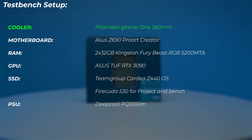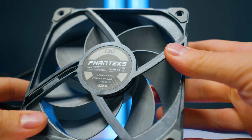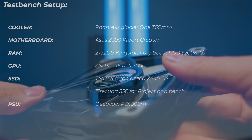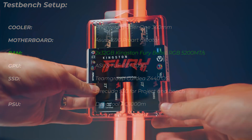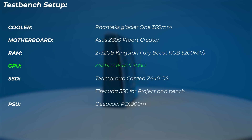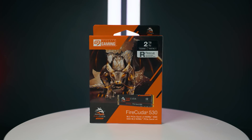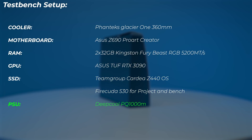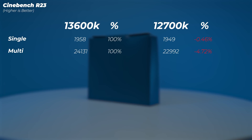In real-world testing, we'll see if those extra E-cores on the 13600K actually matter, or if more P-cores like the 12700K are better. For the test bench I'm using a Phanteks Glacier One 360mm AIO with three Phanteks T30 fans, an ASUS Z690 Pro Art Creator motherboard, 64GB of Kingston Fury Beast RGB at 5200 MT/s, an ASUS RTX 3090, a Cardea Z440 SSD for the OS, a Seagate FireCuda 530 for the project drive, and a DeepCool BQ 1000M PSU.